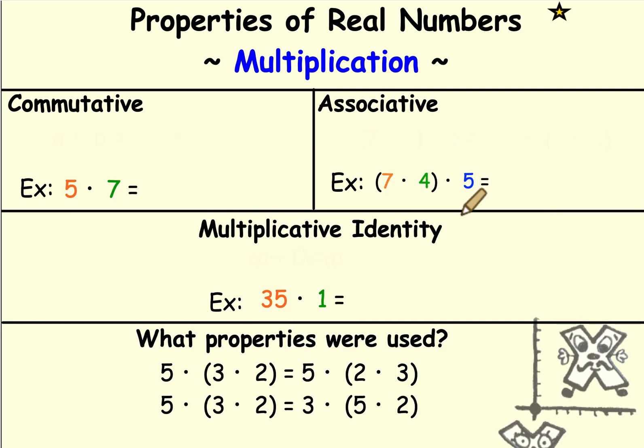And all of those properties also apply to multiplication, but they do not apply to subtraction and division. So for the commutative property, 5 times 7 we know is 35, and 7 times 5 is also 35. The commutative property for multiplication says that if we have a times b, it's the same as b times a. So any two numbers, if I multiply them, multiplying them in reverse order is the same.